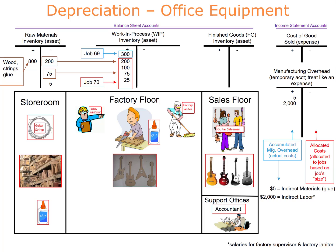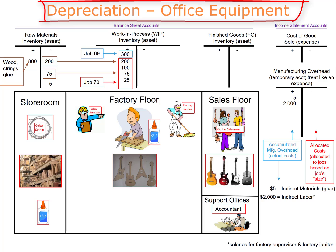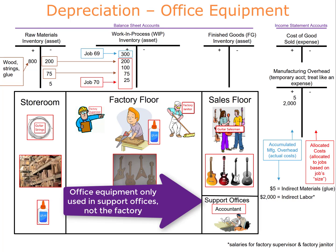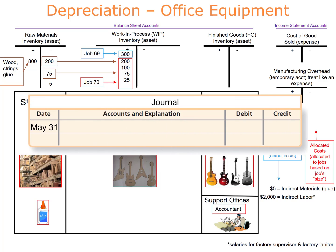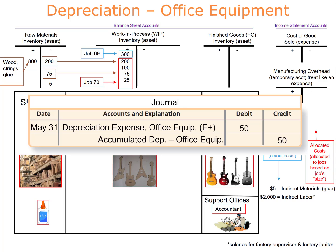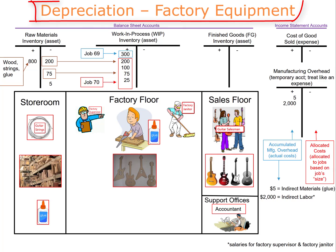The company needs to record $50 of depreciation on office equipment and $500 of plant depreciation. The depreciation on office equipment, which is used in the support offices, is not a product cost because office equipment is not needed to make the products. The journal entry debits depreciation expense — office equipment for $50 and credits accumulated depreciation — office equipment for $50.